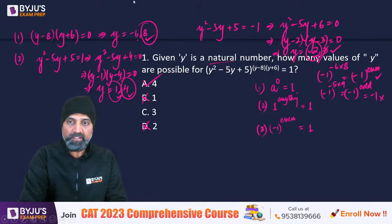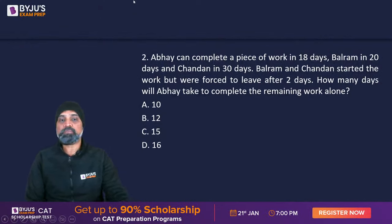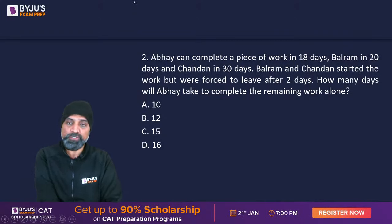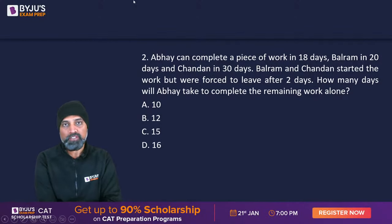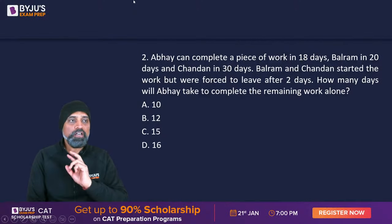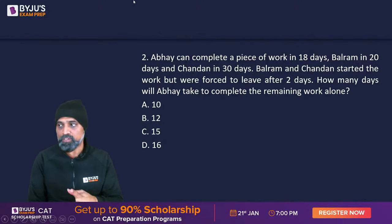Next question: Abhay can complete a piece of work in 18 days, Balram in 20 days, and Chandan in 30 days. Balram and Chandan started the work but were forced to leave after two days. How many days will Abhay take to complete the remaining work alone? This is a very simple standard time-and-work question.